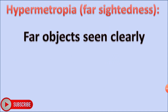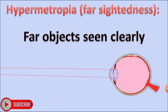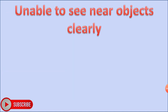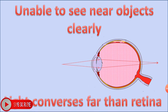The second defect is hypermetropia, or far-sightedness. In this condition, far objects are seen clearly because light coming from a distant object is focused on the retina. However, the person is unable to see near objects clearly, as light from near objects is focused beyond the retina.